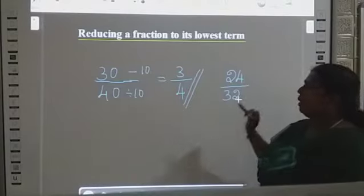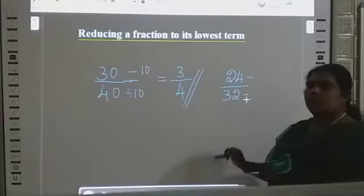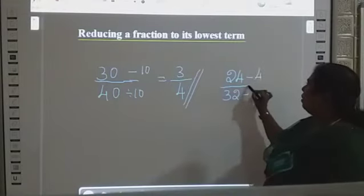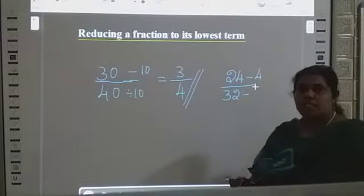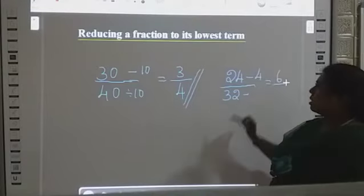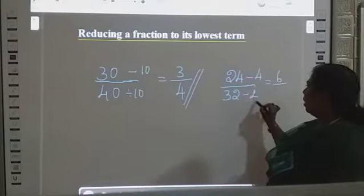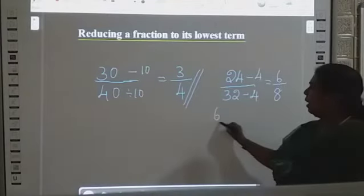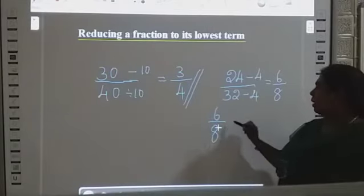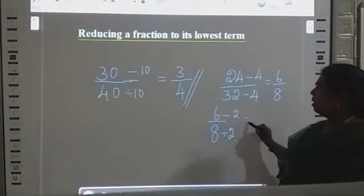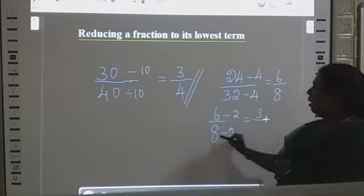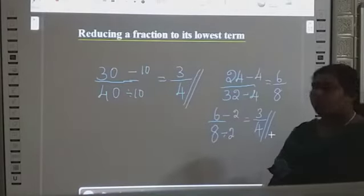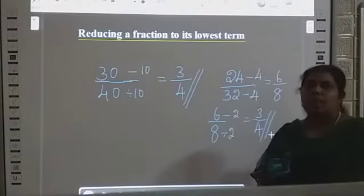Next example: 24 divided by 32. Which table can we use — second or fourth? We can use the fourth table. 24 divided by 4 is 6, and 32 divided by 4 is 8. Now 6 by 8 — both are even, so divide by 2 again: 6 divided by 2 is 3, and 8 divided by 2 is 4. So 24 by 32 in lowest terms is 3 by 4.